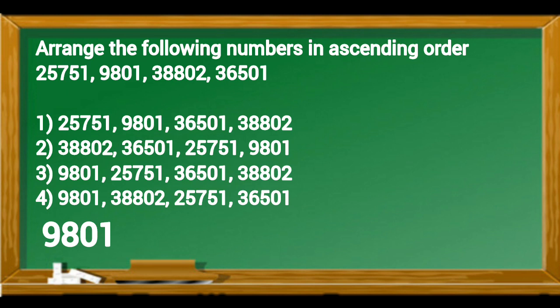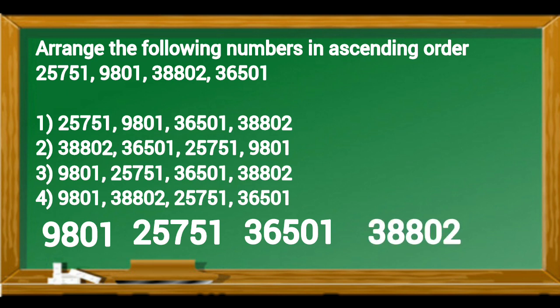In these numbers smallest number is 9,801. Then the greater number is 25,751. Next greater number is 36,501. And the greatest number is 38,802. So the ascending of these numbers is 9,801, 25,751, 36,501, 38,802. And according to this, the third option is correct answer.